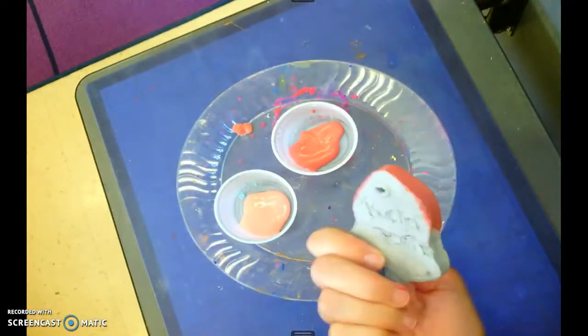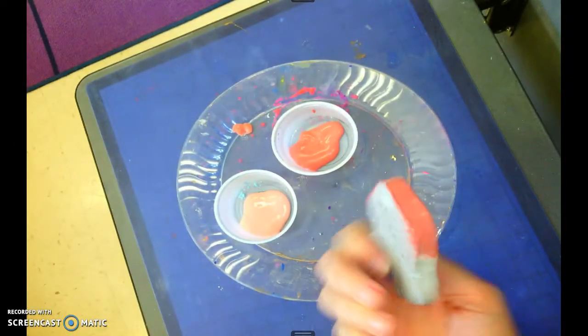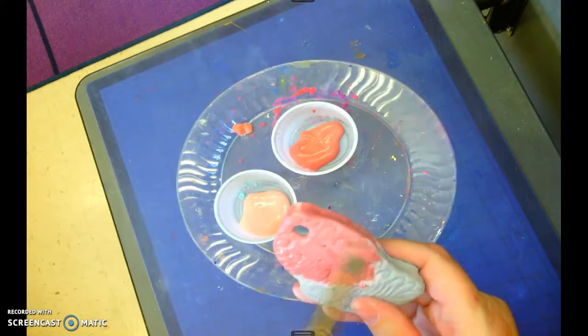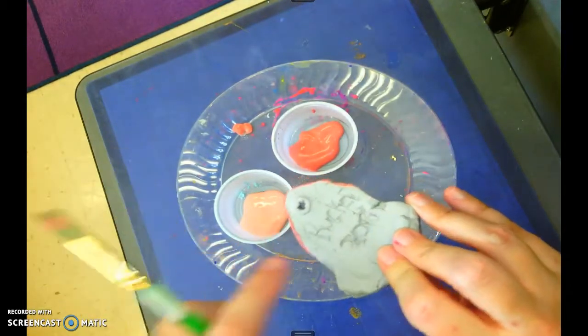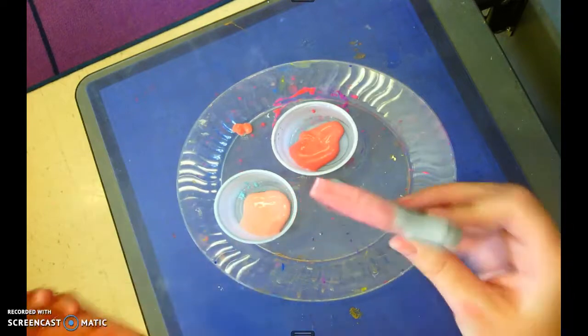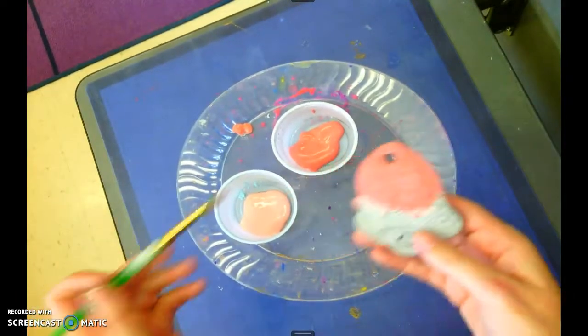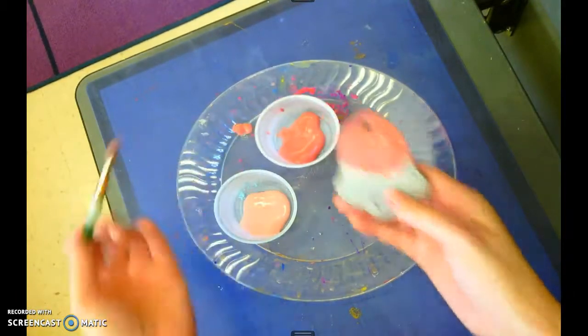See how I'm being real careful not to get any on the back? You want to be very careful. And if you do accidentally get some on the back, Ms. Rucker's going to get a wipe and I'm just going to wipe it off, but just try not to get any on the back. All right.